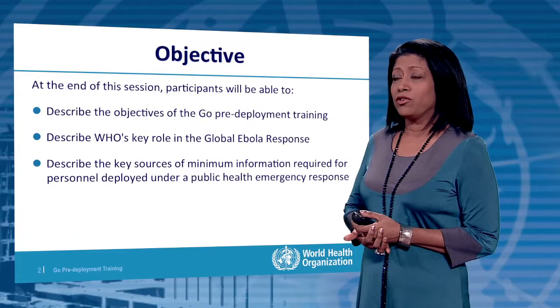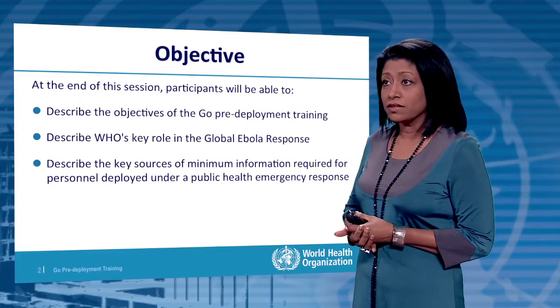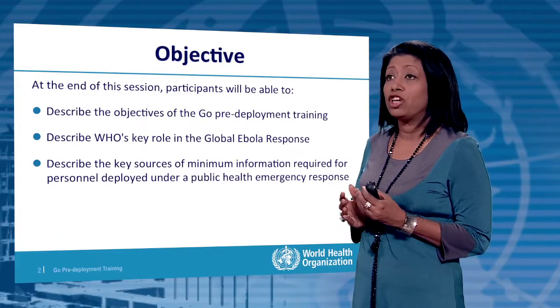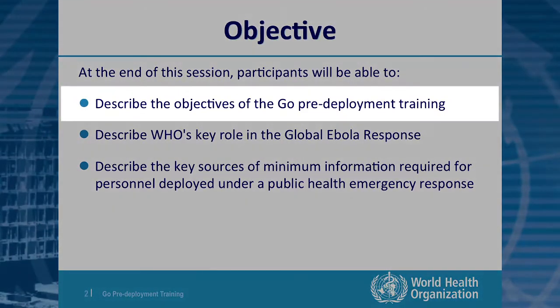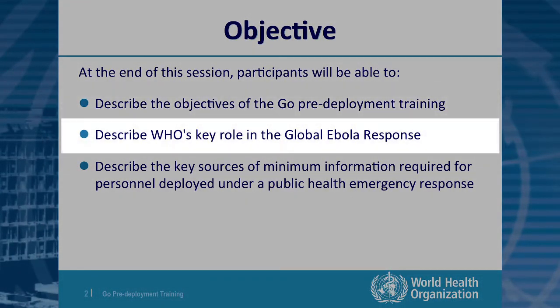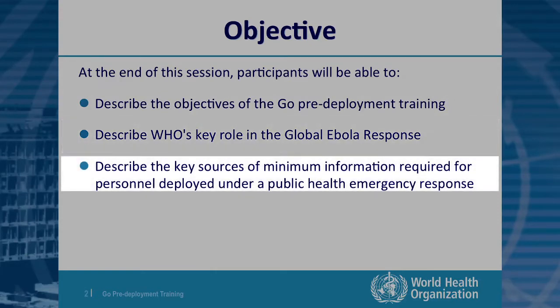Welcome to the introductory module of the GO training. This is module one, where by the end of the module you would have achieved three things: you will be able to describe the objectives of the GO pre-deployment training package, you will be able to list WHO's key roles and functions in the global Ebola response, and you will be able to describe key information sources that you will need as someone being deployed to the Ebola response.